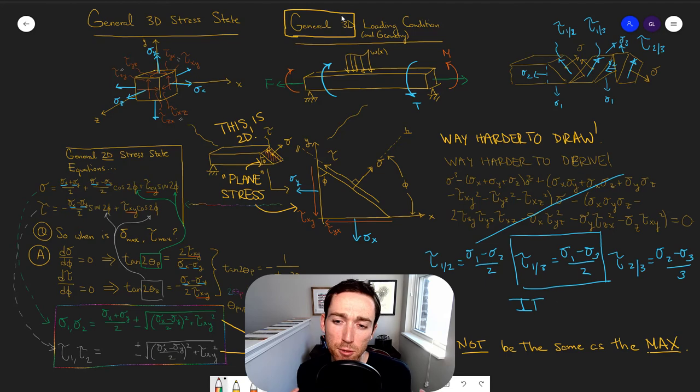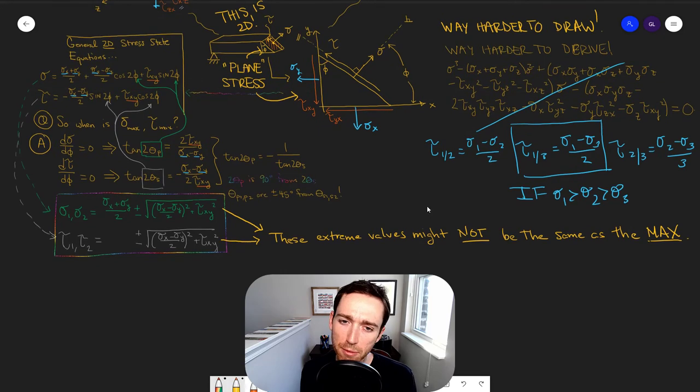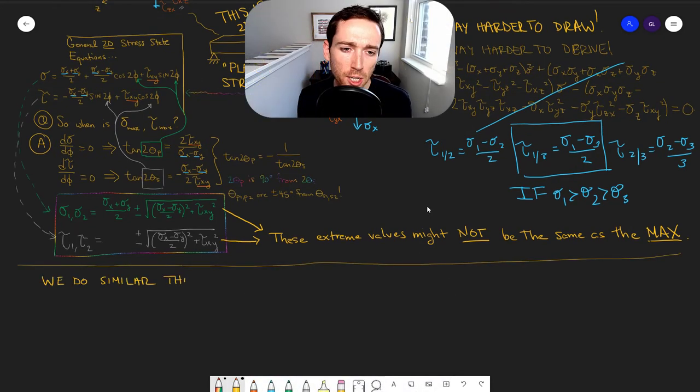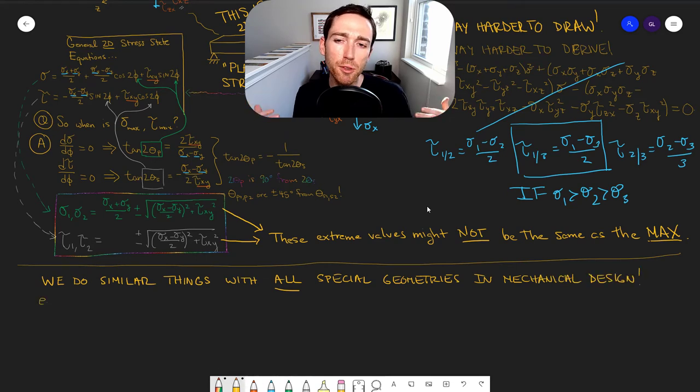So if you do that and you line up your stresses 1, 2, 3, boom, boom, boom, this one's always max. So that's really a beautiful mathematical trick and result. So what we do then is we take these sigma 1, sigma 2, sigma 3 ideas.